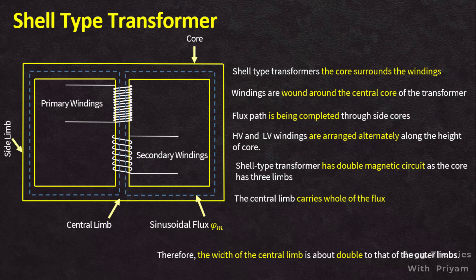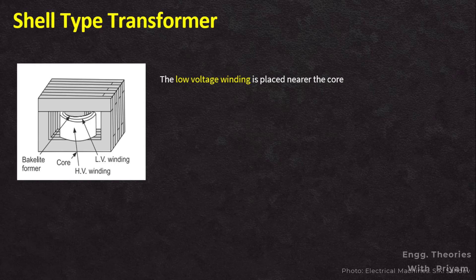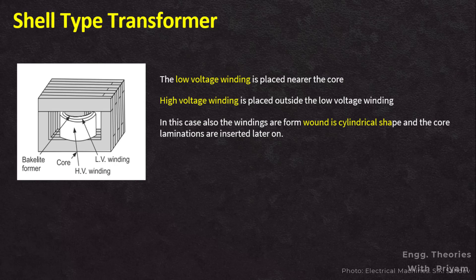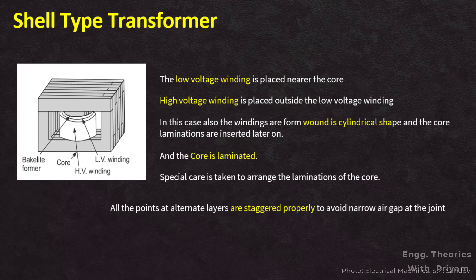The low voltage coils are placed nearer to the iron core to reduce the amount of high voltage insulation. Both primary and secondary windings are placed on the central limb side by side or concentrically. The low voltage winding is placed nearer the core and the high voltage winding is placed outside. The windings form a cylindrical shape and the laminations are inserted later on. Special care is taken to arrange the laminations; at alternate layers, joints are staggered properly to avoid narrow air gaps, and these joints are known as overlapped or imbricated joints.